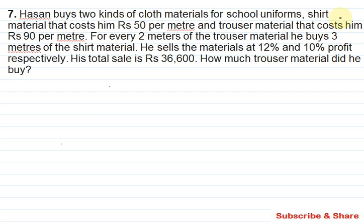So let's work on this problem. Haasan buys two kinds of cloth materials for school uniforms. Two kinds of materials are available: shirt material that costs 50 rupees per meter, and trouser material.